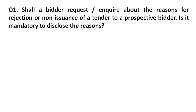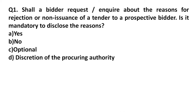Question 1: Shall a bidder request or enquire about the reasons for rejection or non-issuance of an invite to a prospective bidder? Is it mandatory to disclose the reasons? Option A: Yes. Option B: No. Option C: Optional. Option D: Discretion of the procuring authority. Answer: Yes.